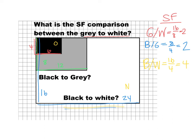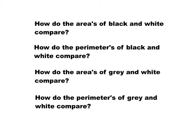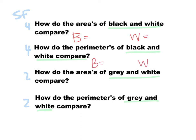Now we're going to come back to this after we do our last slide. I'm going to fill in what we just talked about: from black to white, the scale factor was 4; from gray to white, the scale factor was 2. Now they want us to find the area and the perimeter for all three colors. I want you to pause this slide right now, go ahead and find the areas and perimeters of each of these colors, then come back and we'll check it together.